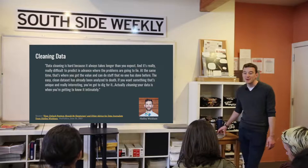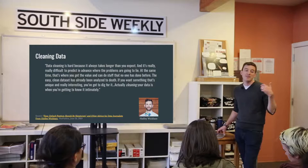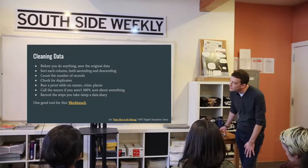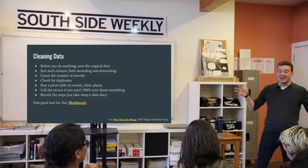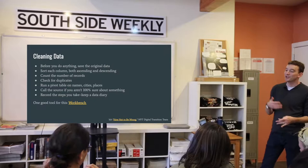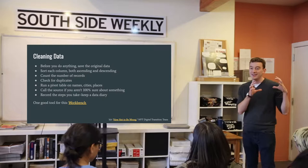So you've gone out, you've found this data from the government, from a non-profit, you've maybe built a database yourself, and now you've got to go clean it. How do you do that? So before you do anything, save the original. Don't start making changes on data without saving the original data set so that you can always go back. If you make a mistake, you've always got a raw set of data that you started with.